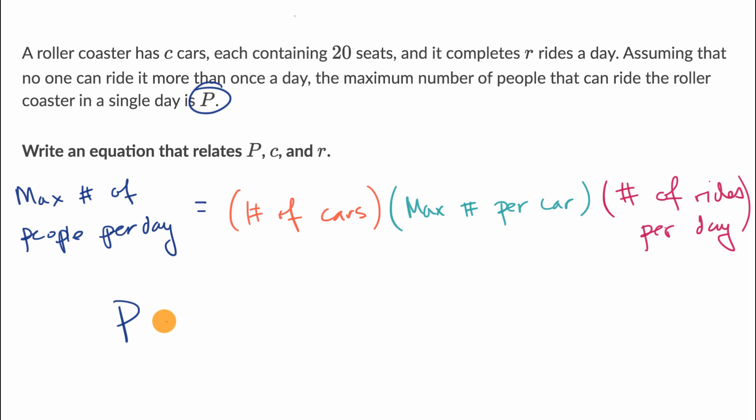So we'll say capital P is equal to the number of cars per roller coaster. So they give us that right over here. Roller coaster has C cars. So that's going to be this variable here in orange, that's C.